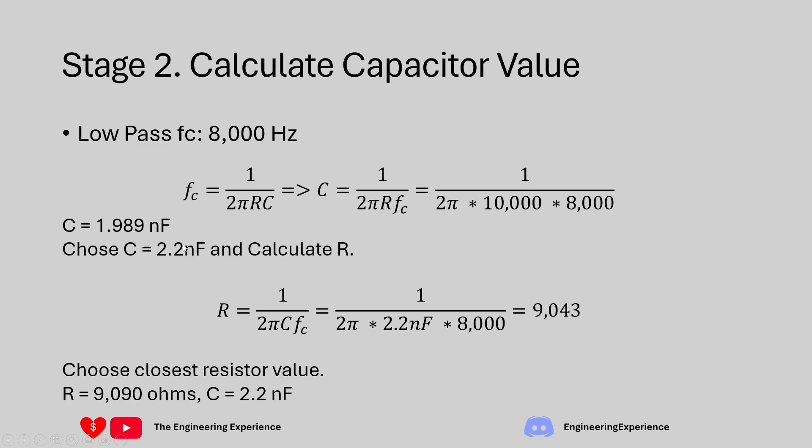The closest value capacitor is 2.2 nF. We can plug in this number and recalculate the resistance, giving us a resistor of 9,043 Ω. We want to find the closest resistor value available in the real world, which gives us a resistor value of 9,090 Ω and a capacitance of 2.2 nF.